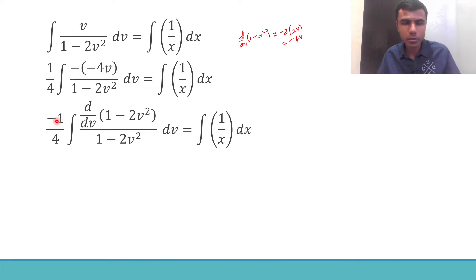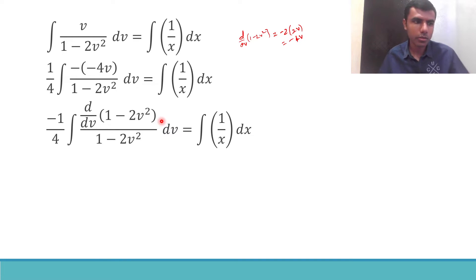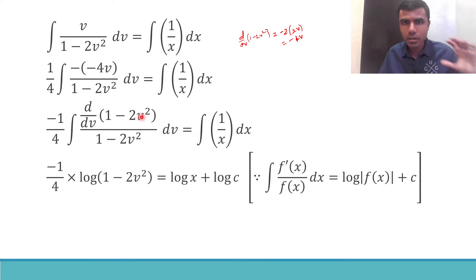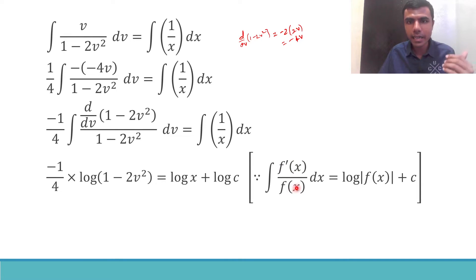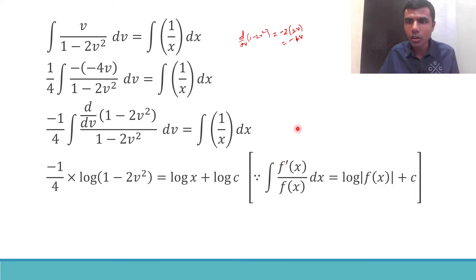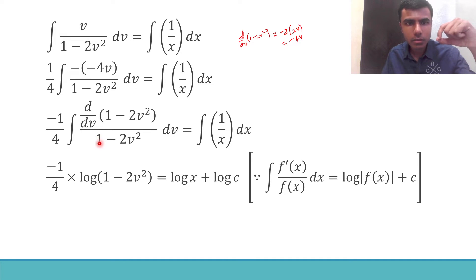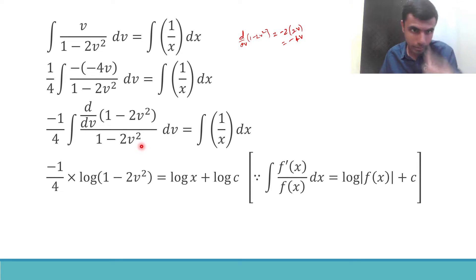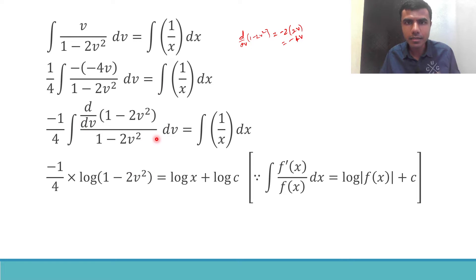As mentioned, I brought the minus outside — so minus 1/4, and minus 4v is nothing but the derivative of (1 minus 2v²). The purpose is: in integration, whenever there is an integral of the form f'(x) divided by f(x) — meaning f(x) is in the denominator and its derivative is in the numerator — the answer is log|f(x)| + C. Here I have (1 minus 2v²) in the denominator and its derivative in the numerator, so it matches exactly.